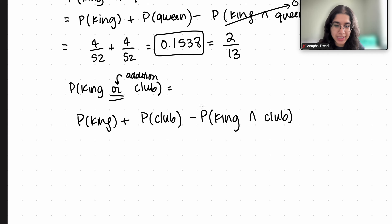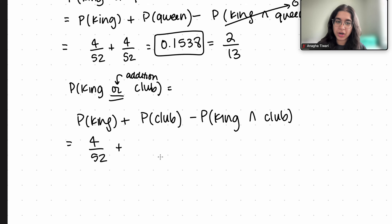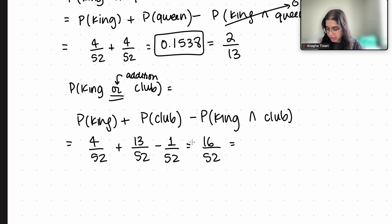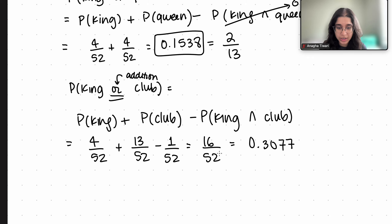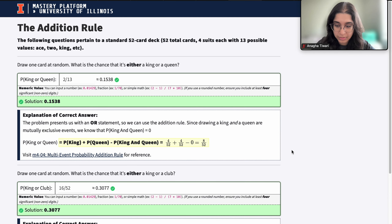Unlike the previous problem, drawing a king and a club is actually plausible — you don't want to rule out that possibility. P(king) = 4/52. P(club) = 13/52, since there are 13 clubs in a standard deck. Minus P(king and club), which is exactly one card — the king of clubs — so that's 1/52. Our final answer is 16/52, or 0.3077.